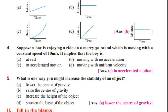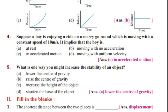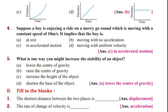Suppose a boy is enjoying a ride on a merry-go-round which is moving with a constant speed of 10 meters per second. It implies that the boy is in accelerated motion. If you turn around, you can change the velocity — that is accelerated motion.